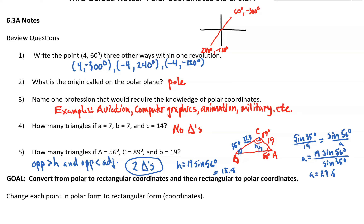Name one profession that would require the knowledge of polar coordinates — there are many: aviation, computer graphics, animation, military, etc. How many triangles? If A is 7, B is 7, and C is 14, there would be no triangles.